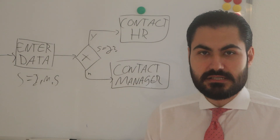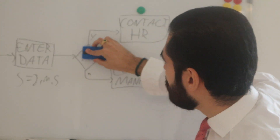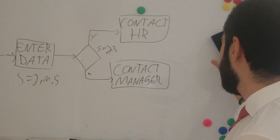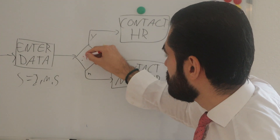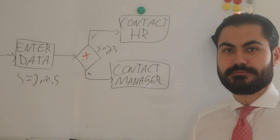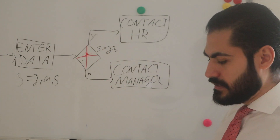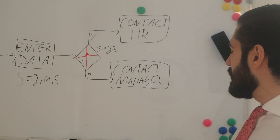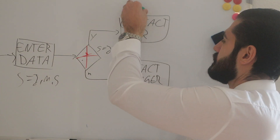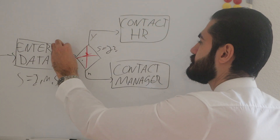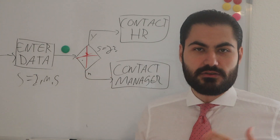Now let's look at the parallel gateway. It looks a bit different — instead of an X there's a plus symbol inside. So this is a plus. Now, a condition like 'is seniority junior or not?' doesn't make sense anymore here.